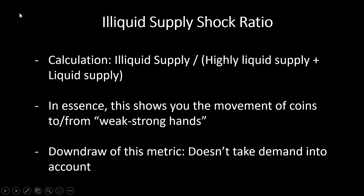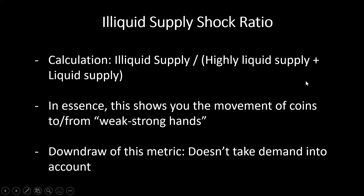Now we're looking at the illiquid supply shock ratio — a metric I created last summer with Willy Woo. The goal was to get a gauge of the movement of coins from weak to strong hands, or from strong to weak hands. The calculation is illiquid supply divided by highly liquid plus liquid supply — in layman's terms, strong hands divided by weak hands. It gives you the qualitative view of Bitcoin's float. One downside of this metric is that it doesn't take demand into account — for a supply shock to take place, you need low available supply plus demand.